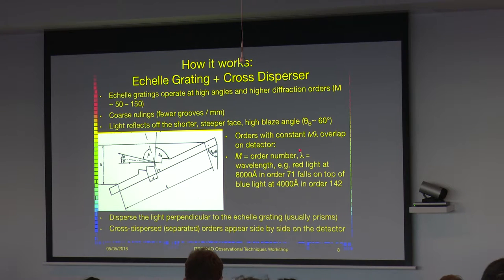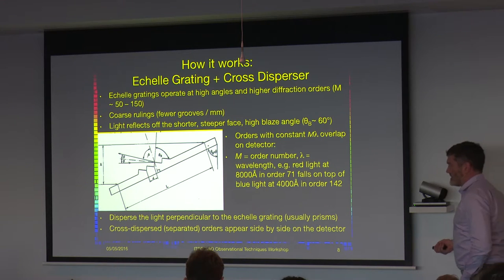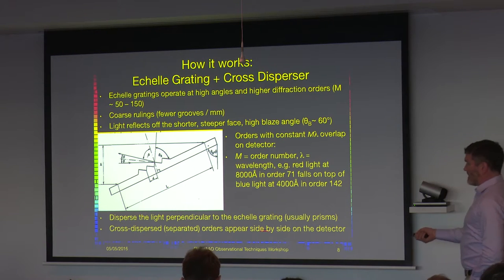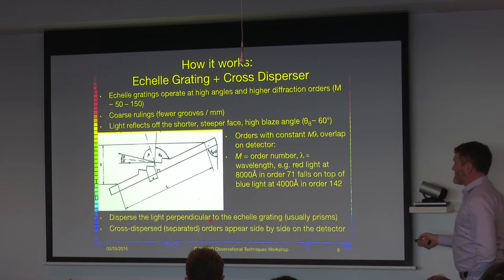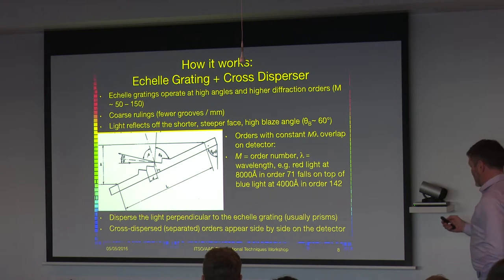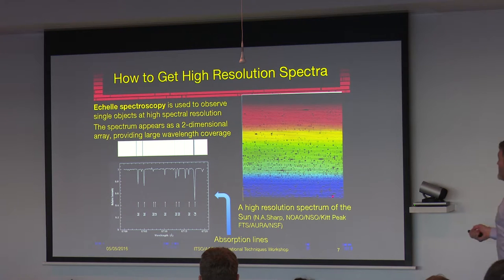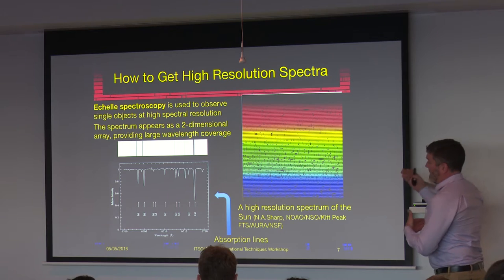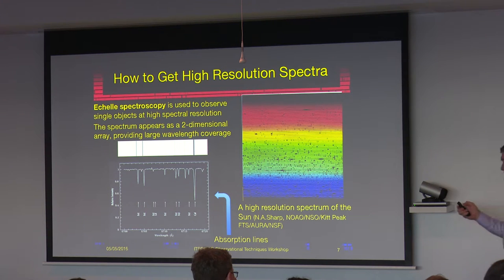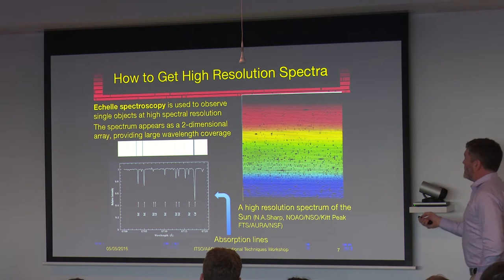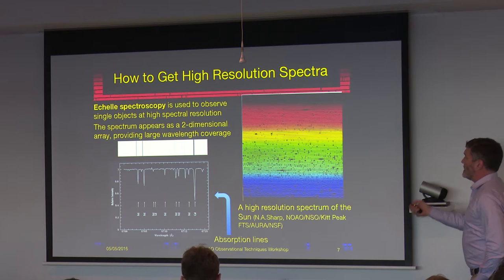These high orders generally fall on top of each other, so you have red light at 8,000 angstroms in order 71 falling on top of blue light at 4,000 angstroms coming from order 142. To deal with that, generally speaking, people will disperse the light with a cross-disperser, often in the form of a prism. Then the cross-dispersed or separated orders appear side by side on the detector. Here is an echelle spectrum that's been cross-dispersed. If you didn't have the prism to cross-disperse it, all of these would be on top of each other and you'd have a mess. With the echelle like this, you end up with a high-resolution spectrum that covers a wide range of wavelengths.